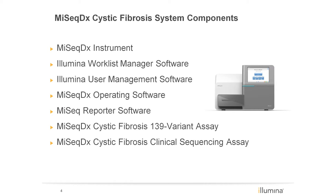There are four software components to the MiSeq DX instrument. The first is the Illumina Worklist Manager software, which walks the user through the creation of a sample sheet documenting the correlation between sample ID and multiplexing index primers. The Illumina User Management software is used to assign user permissions and allow systematic user tracking. The MiSeq operating software controls the MiSeq DX instrument processes, and the MiSeq Reporter software visually presents the data to the user.